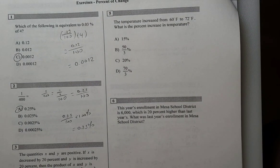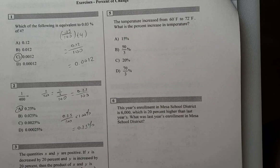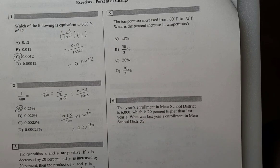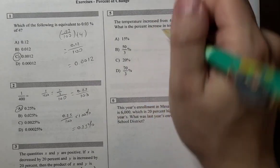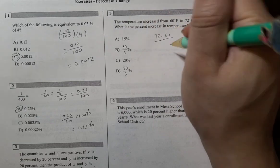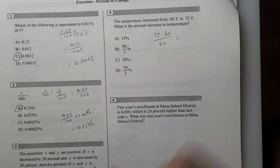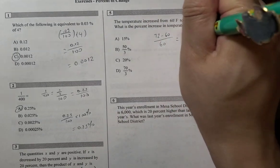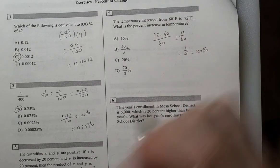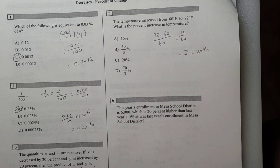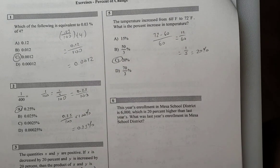Number 5. The temperature increased from 60 degrees to 72 degrees. What is the percent increase in temperature? So, go ahead and try this one. Alright, so again, increase from this to this. The final minus initial over initial. So, what is that? That's 12 over 60, which is a fifth. So, increase by 20%.